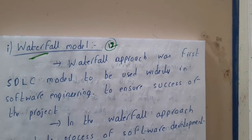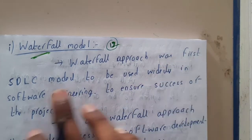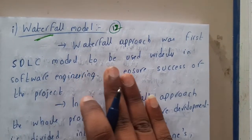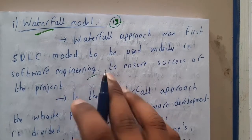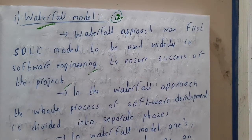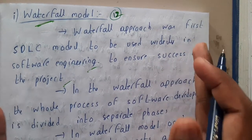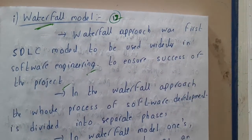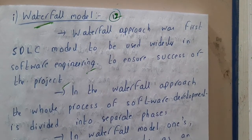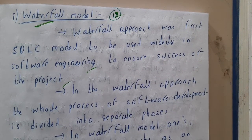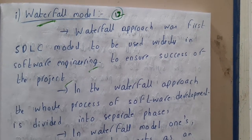The waterfall approach was the first SDLC model to be widely used in software engineering to ensure the success of a project. Currently, the waterfall model is considered outdated, and most companies are not using it due to its drawbacks, which we will also be discussing.